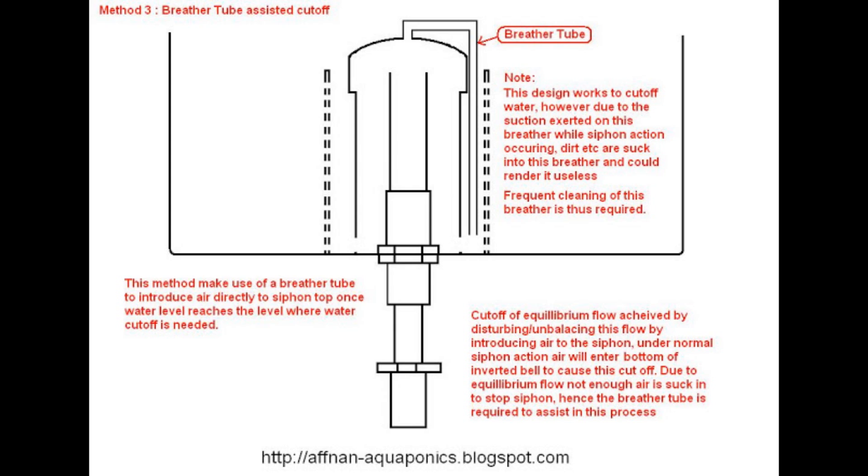So I looked at this design for the bell siphon and I realized that that breather tube is actually sucking up water too as the water level descends down through the grow bed, and it's not until it hits the very bottom that it starts to suck in air. So why can't that breather tube itself be larger so that it's able to suck in more water?